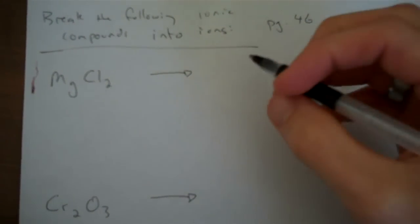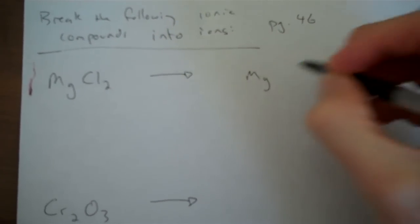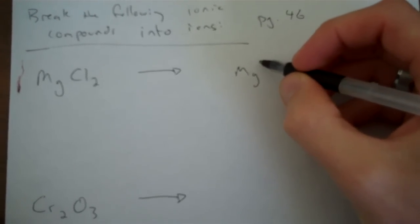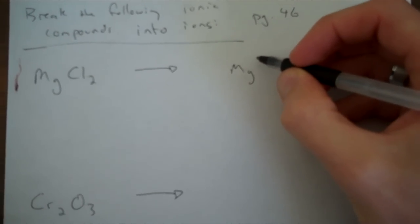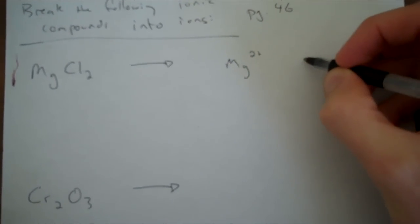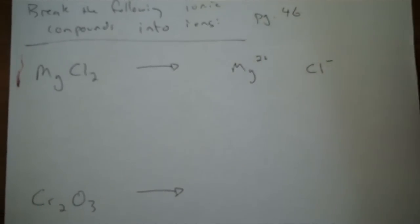I have MgCl2. So I'm going to write on the right the two ions that are in this compound. Mg, and I know from the ions I've memorized on page 44, that Mg is always 2+. And Cl, chloride, is always 1-.